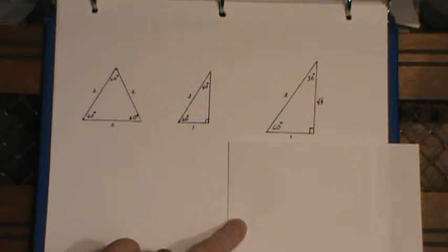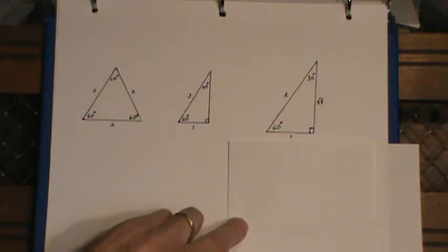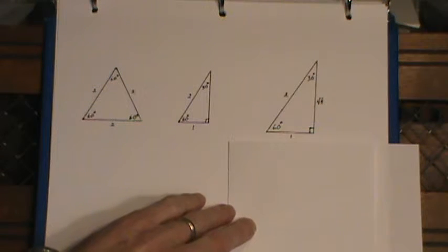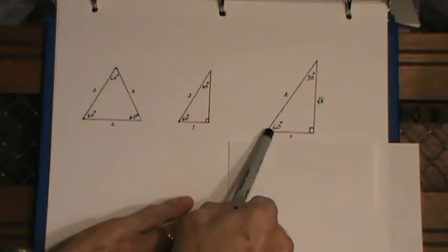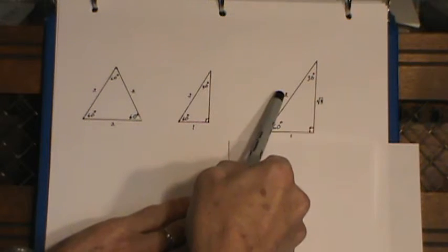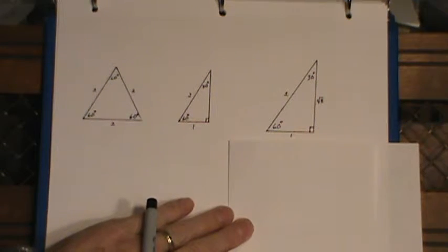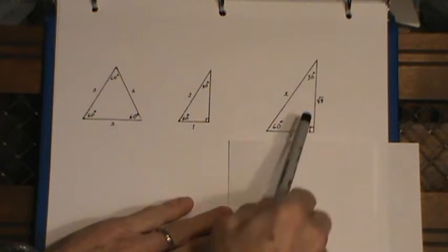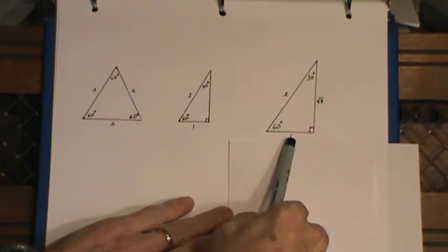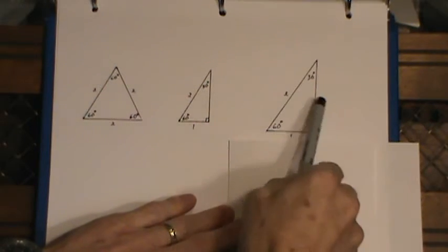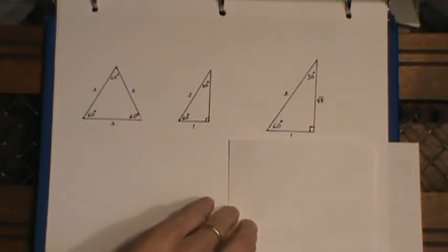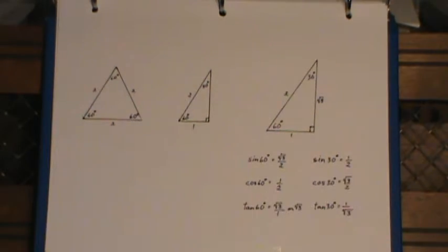Now once you've got that triangle, you can get all the trig ratios of 60 and 30 from that triangle. For example, if you want the sine of 60, sine of 60 is opposite over hypotenuse. If you wanted the sine of 30, sine of 30 is opposite over hypotenuse. You notice just the names change depending upon which angle you're using.